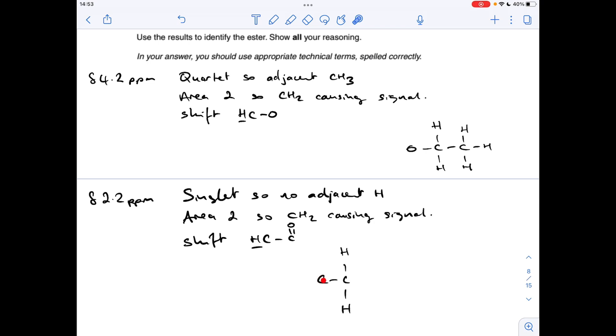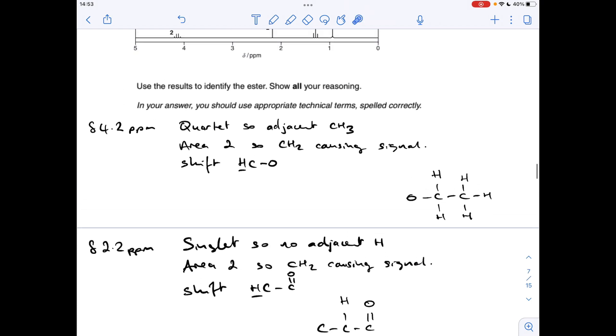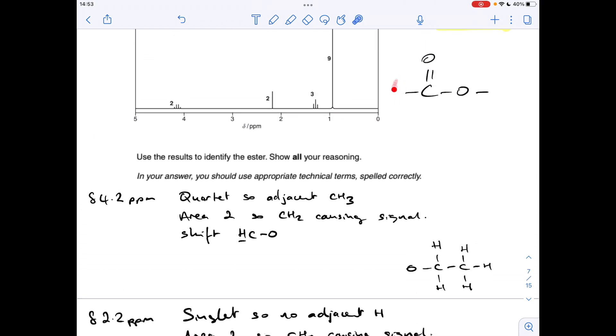So this carbon here, we can't put any hydrogens directly under it, otherwise they would have split the signal for these two. The other thing we know is that there's a C double bond O there. So going back to our ester group, obviously we'll be talking about this bit here.